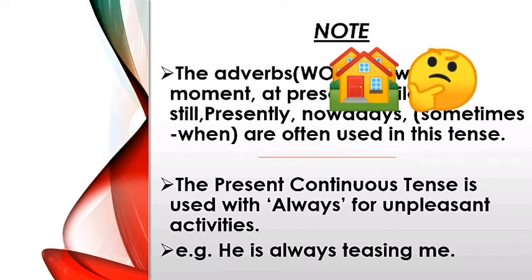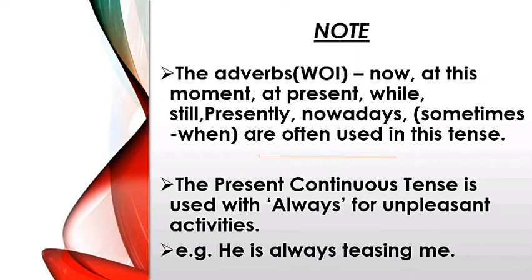Now we will see which adverbs are used in present continuous tense. These are called WI — words of identification — jisse hume pata chale ki yeh present continuous tense hai. Now, at the moment, at present, while, still, presently, nowadays, these days — are often used in this tense. Listen carefully to these sentences.